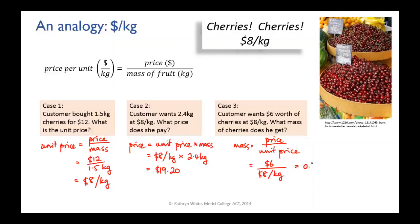6 divided by 8 is 0.75 kilos, so they get that many cherries. So as long as you know two of these three things - the price per unit, the price of the fruit, or the mass of the fruit - you can work out the third missing thing.